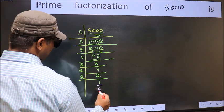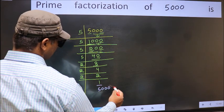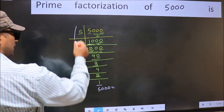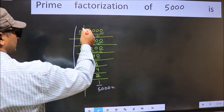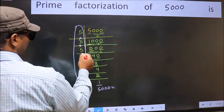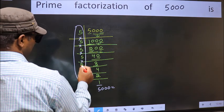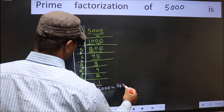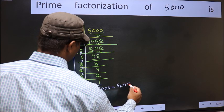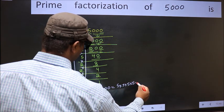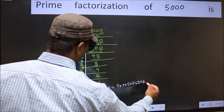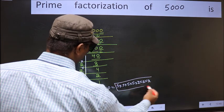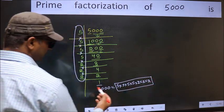So we got 1 here. The prime factorization of 5000 is the product of these numbers, that is 5 × 5 × 5 × 5 × 5 × 5 × 2 × 2 × 2. This is the prime factorization of 5000.